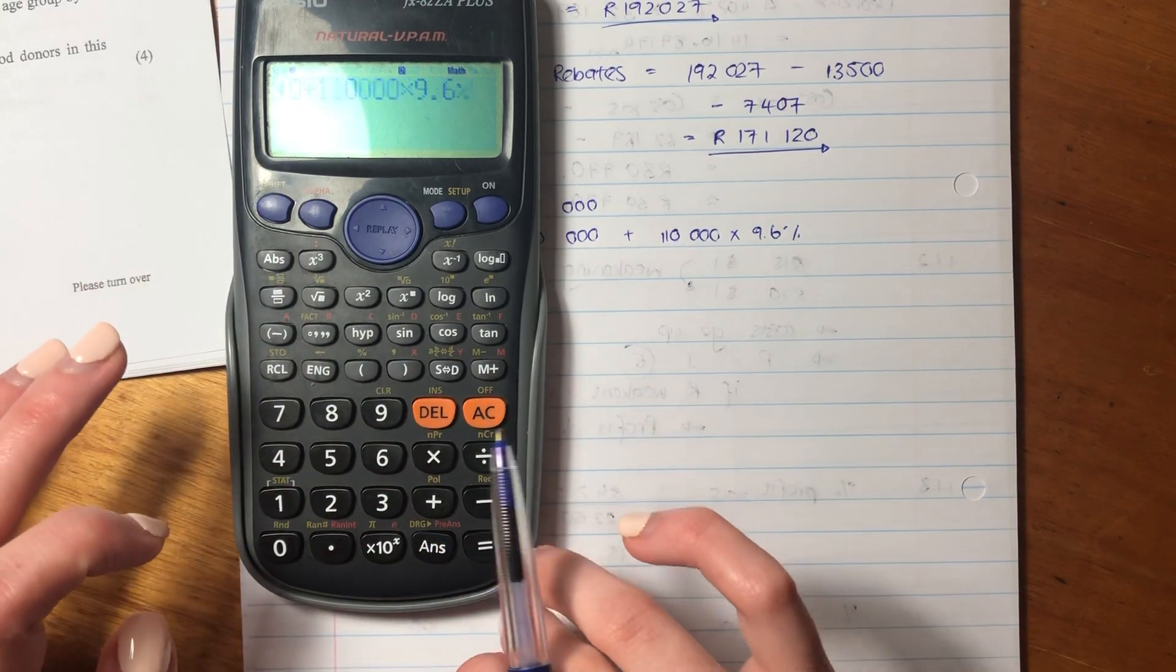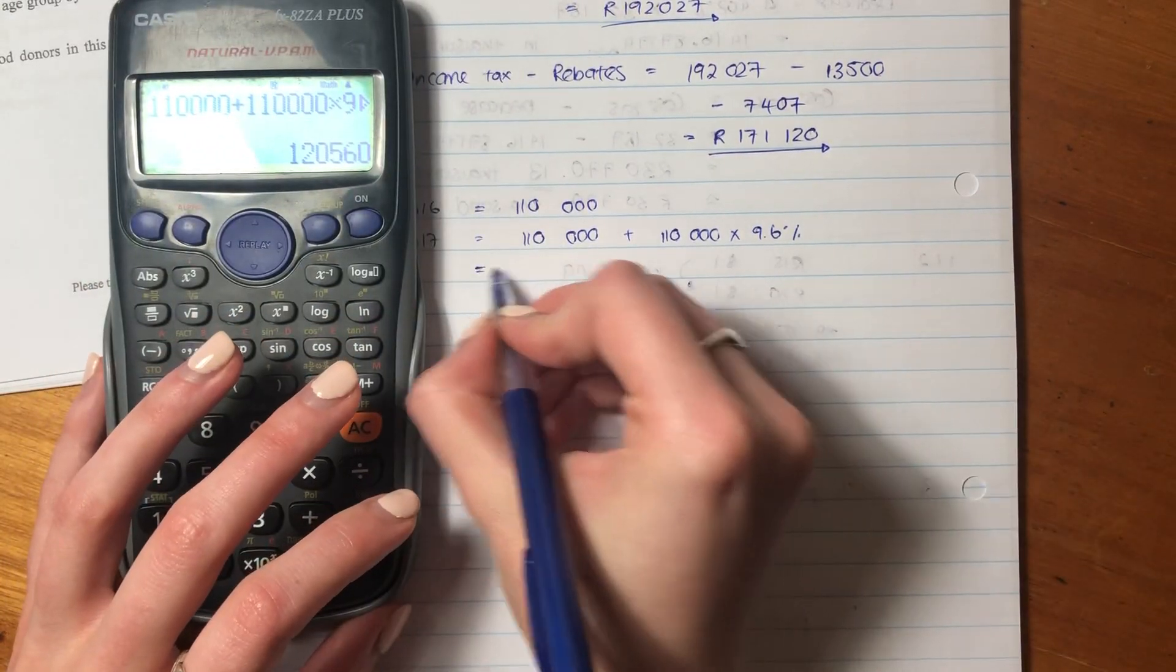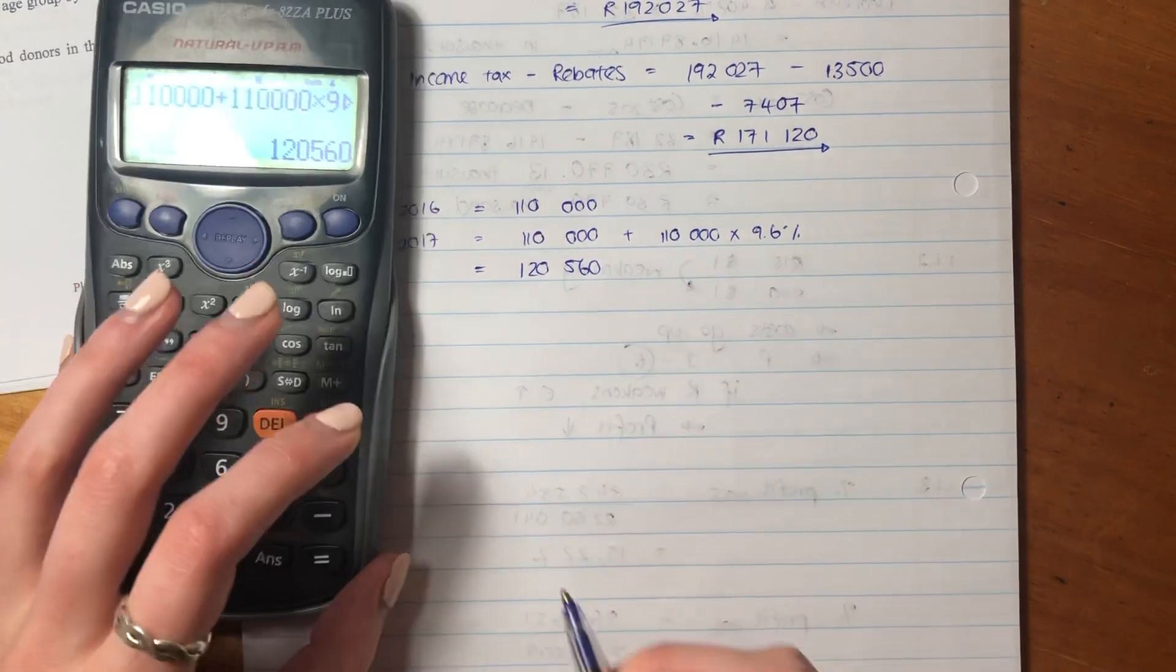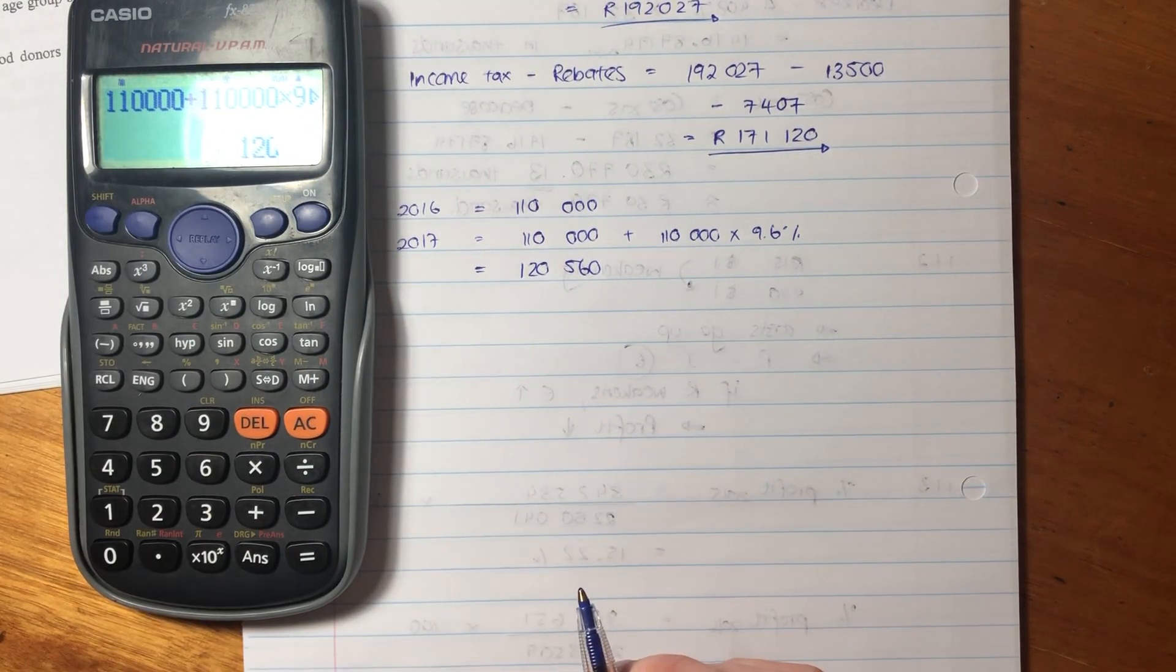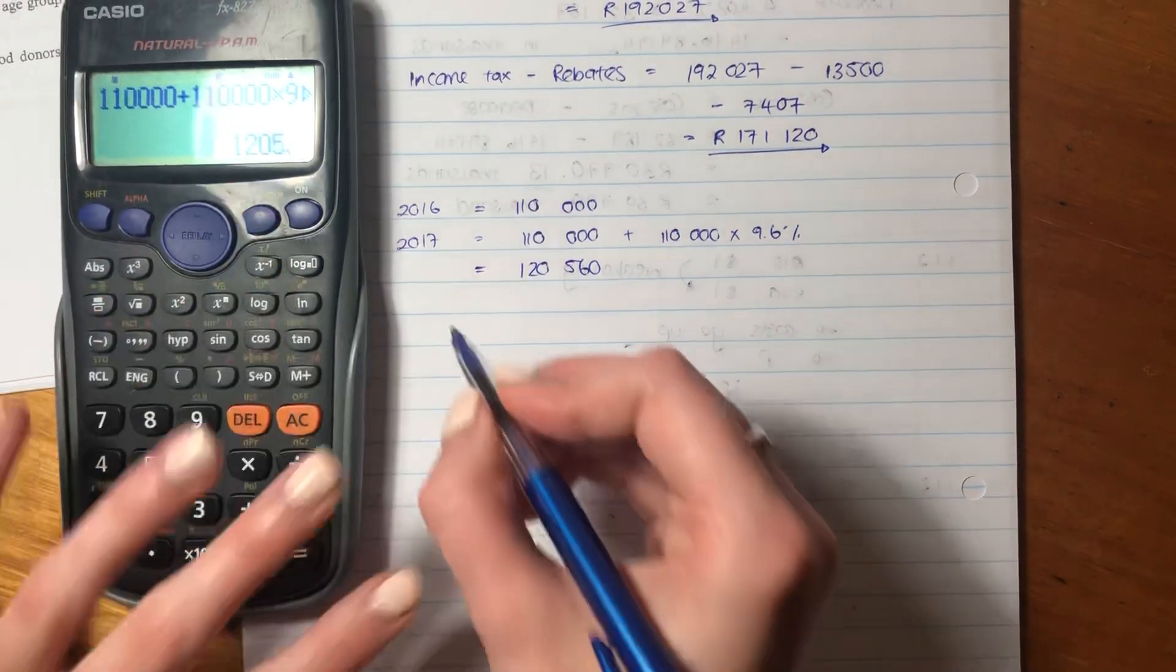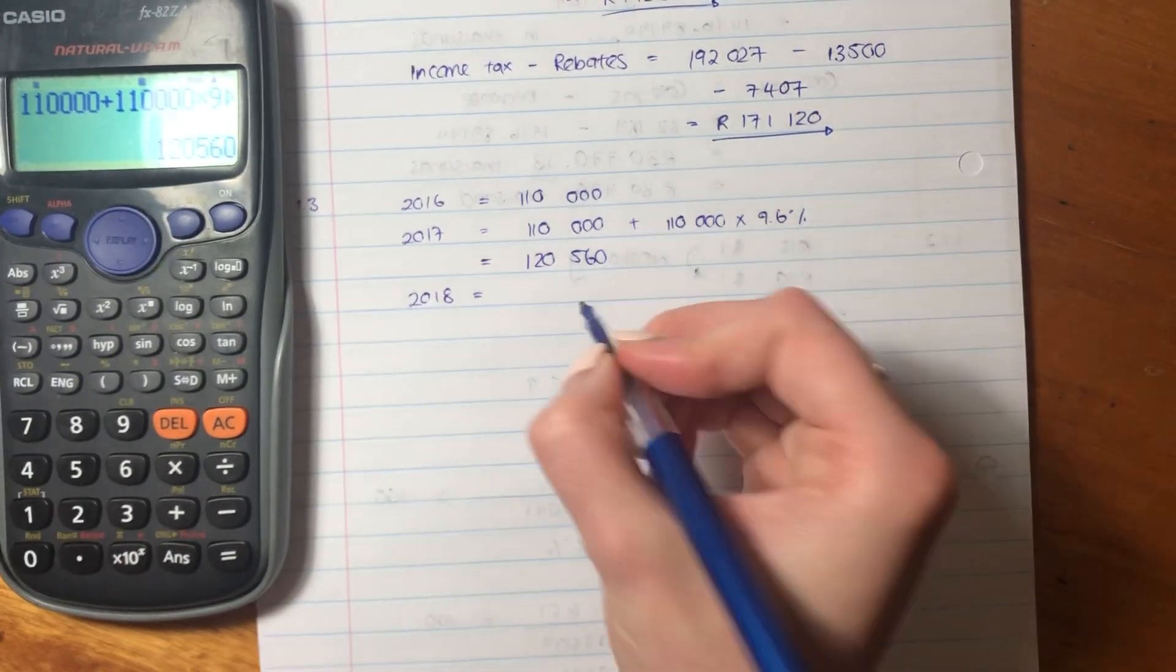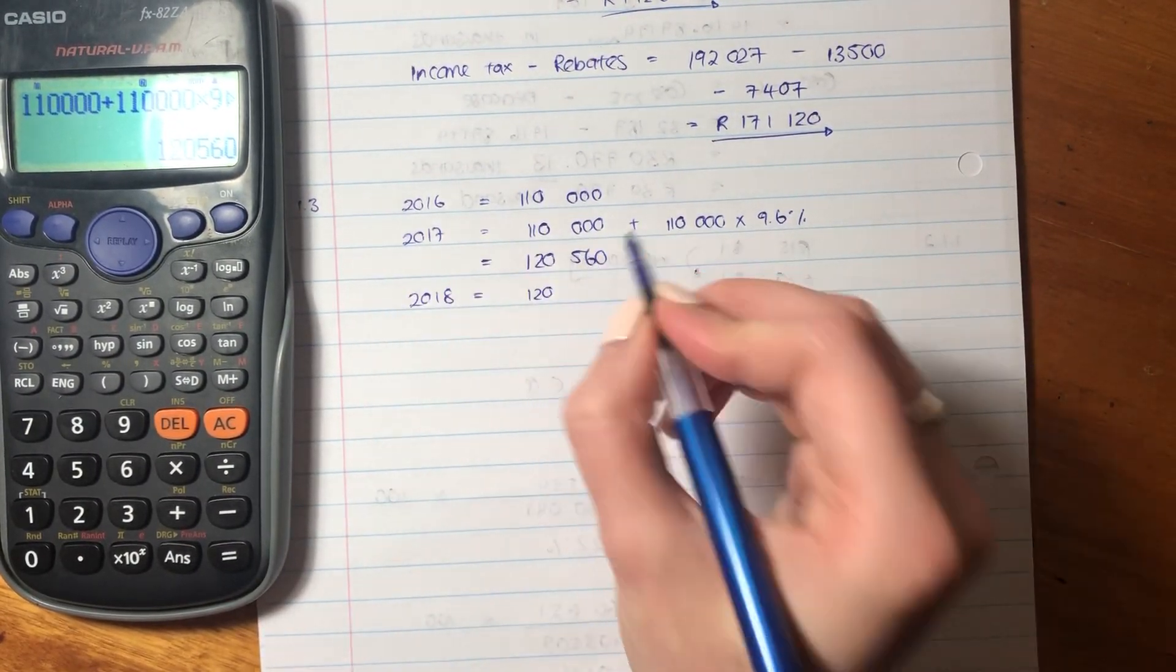And that gives us 120,560. That is in 2017. But we don't just want it for 2017. They've asked us for 2018. So in 2018, we're going to do exactly the same thing, except our starting amount is the amount in 2017.